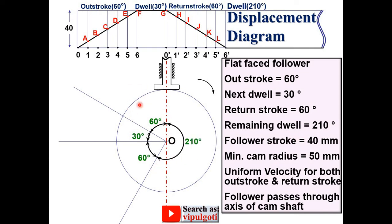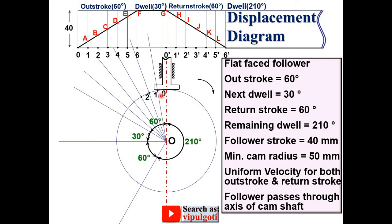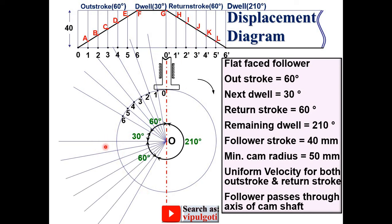Divide the outstroke angle into 6 equal parts using a protractor — each division is 10 degrees. Mark the intersection points as 0, 1, 2, 3, 4, 5, 6, as given in the displacement diagram. Similarly, divide the return stroke angle into 6 equal parts and label the intersection points as 0', 1' up to 6', as given in the displacement diagram.